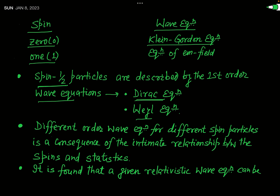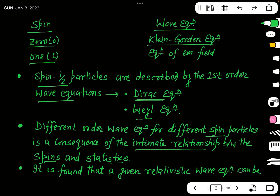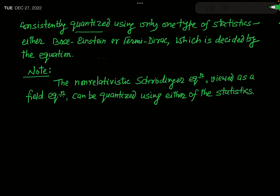The different-order wave equations for different-spin particles are actually a consequence of the intimate relationship between spin and statistics. It is found that a given relativistic wave equation can be consistently quantized using only one type of statistics — either Bose-Einstein statistics or Fermi-Dirac statistics. This fact will be discussed in detail in the next chapter on field theory, when we study second quantization.